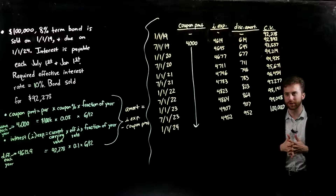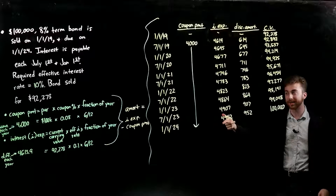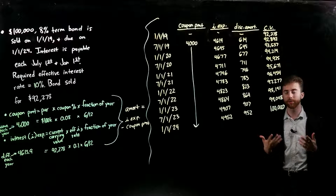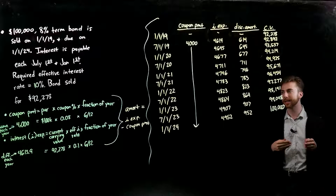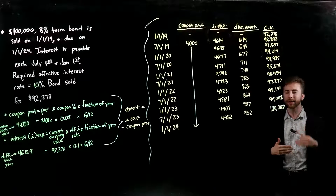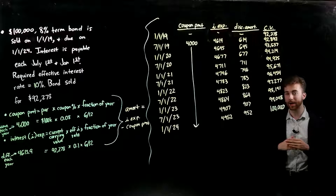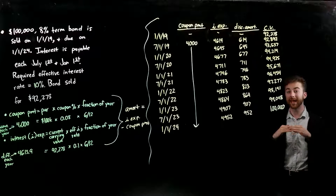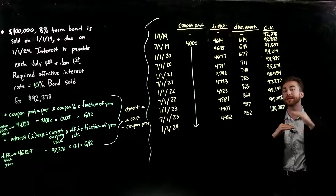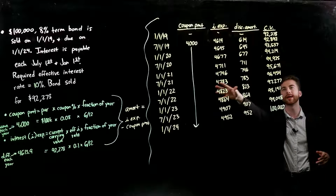Correlating with what we just learned, it makes sense that this bond sold for something less than the par value — $92,278 instead of $100,000 — because the coupon rate is only 8%, but the effective rate, what you could expect for a similar bond, is 10%. So they probably discounted it to entice you to purchase it. Because this is a discount example, as we amortize the bond, the amortization per period is going to add to the carrying value of the bond, amortized up and up until par value.